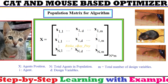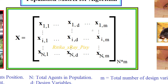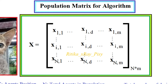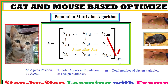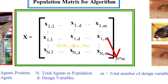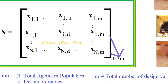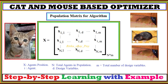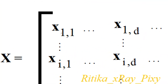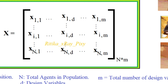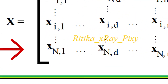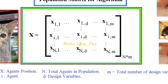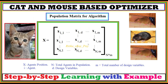This is the population matrix for this algorithm. Here, n is the total number of agents (population size), m is the total number of design variables, and i is the current agent where i goes from 1 to n. The entry x11 is the position of the first agent, and xnm or xn1 is the position of the nth search agent. The number of design variables d depends on the problem.